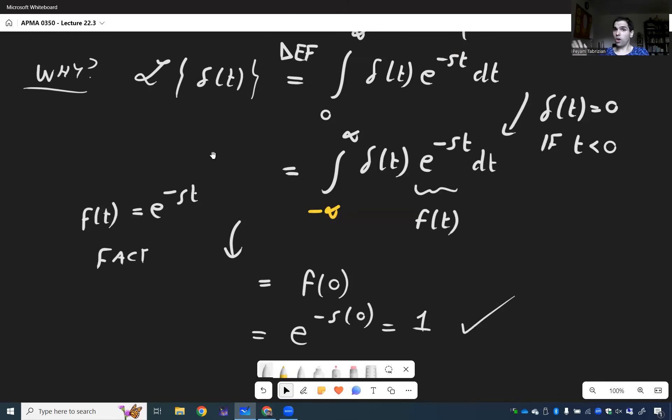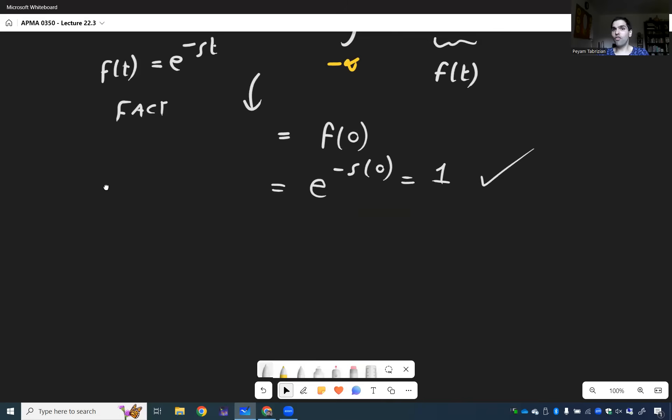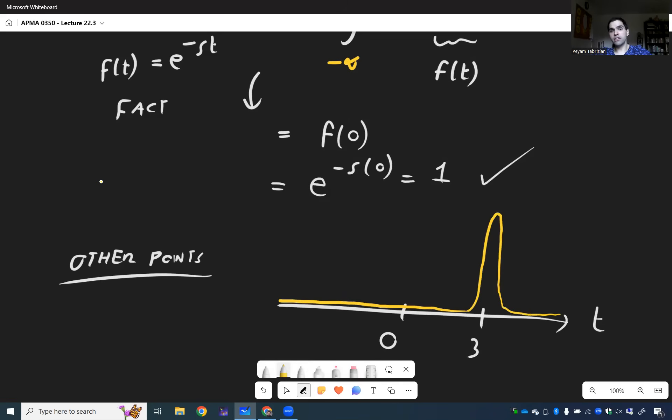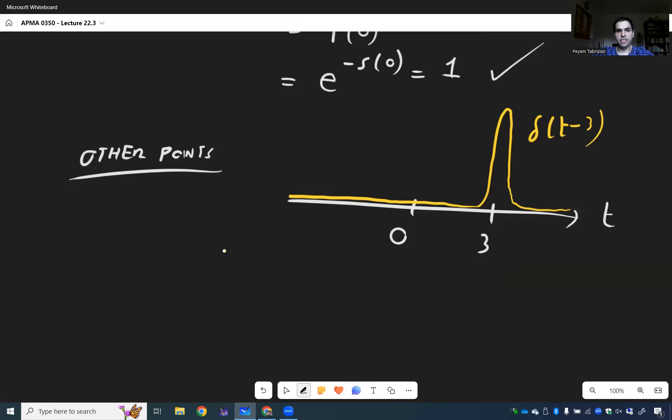And the cool thing is you can also do it at other points, because you may notice so far we just focused at zero. But there's nothing special about that, because what if you want to have a Dirac delta at three? So maybe this is zero and this is three. Well, no problem, just shift the Dirac delta. So for instance, delta(t-3) is the Dirac delta at three.